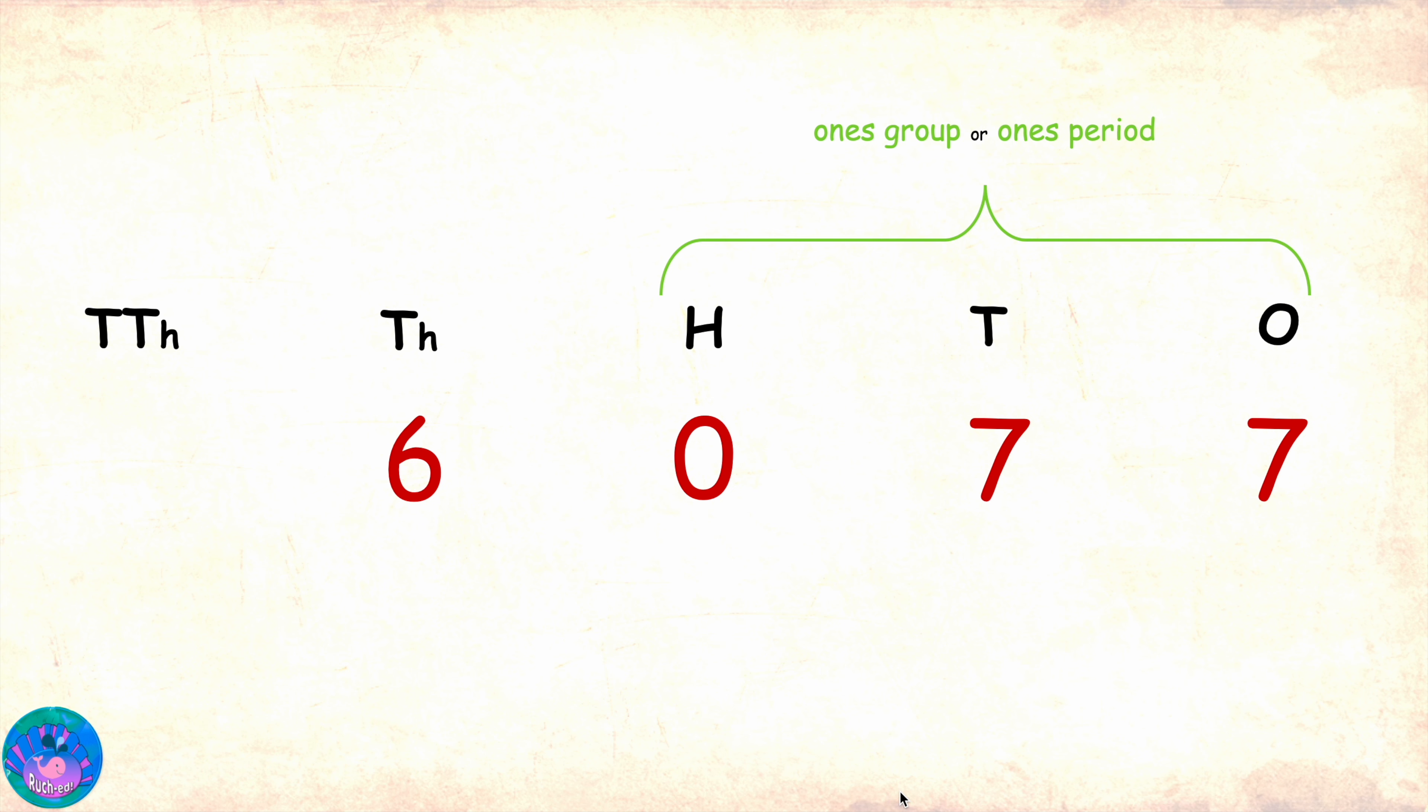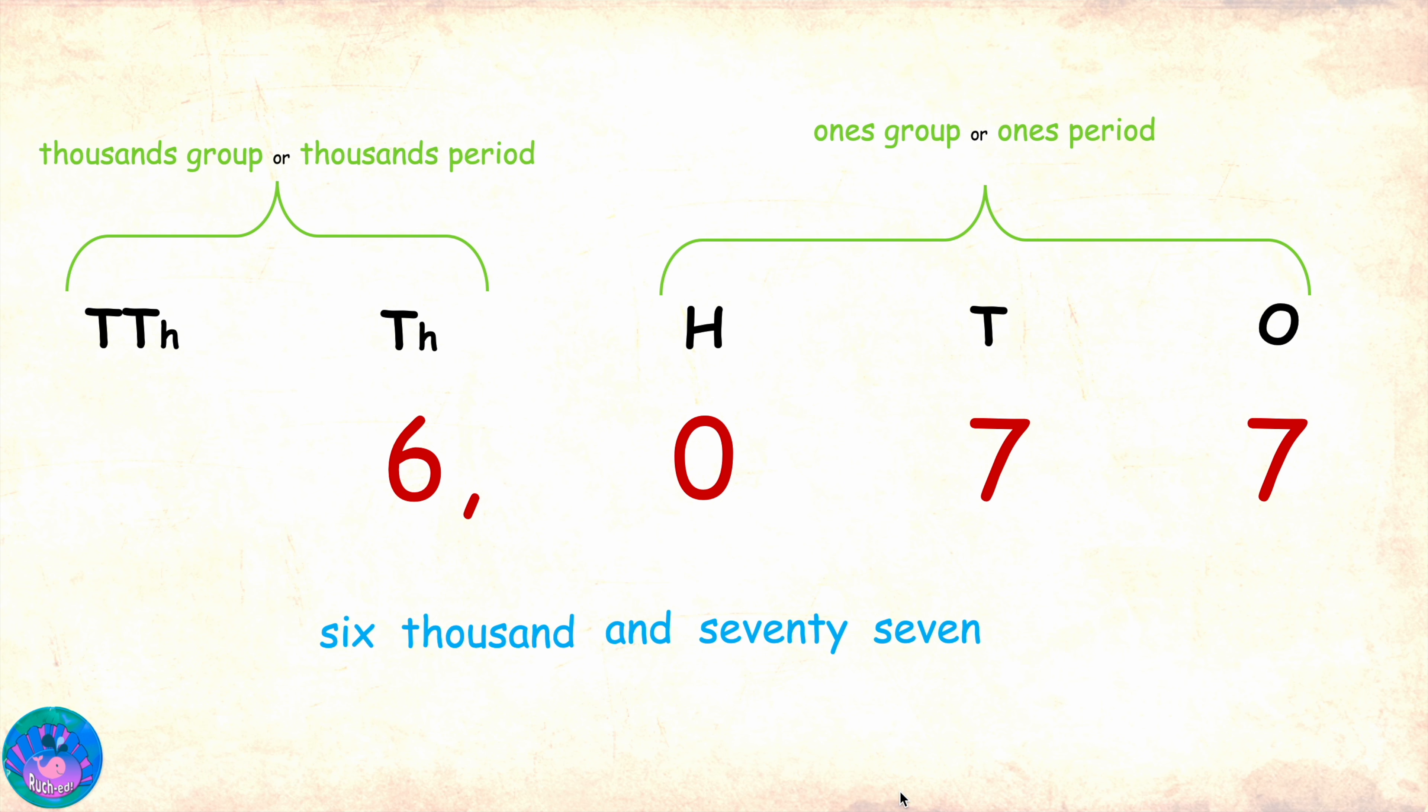Correct. Now, try this one. 6077. Four digits. So, 077 form the ones period and 6 forms the thousands period. Here's the comma between the two. Number is 6,077 since 077 is read as 77.